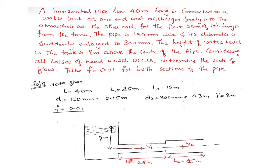The remaining 15 meters length of the pipe will have a 300 mm diameter. The height of water level in the tank is 8 meters above the center of the pipe. He has asked us to calculate the rate of flow by considering all the minor losses.